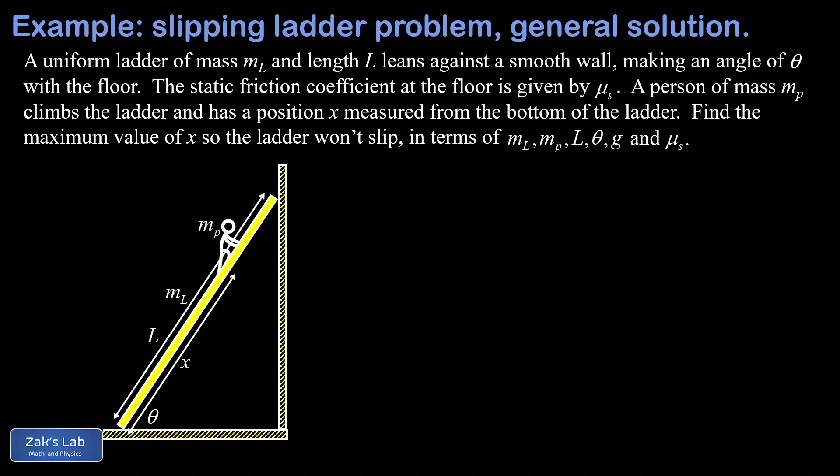In this video we're solving a classic static equilibrium problem called the slipping ladder problem. We're given a ladder with a length of L and a mass of m_L, leaning up against a smooth wall — meaning no friction at the contact point with the wall — at a fixed angle of theta. The contact with the floor does have friction, characterized by a static friction coefficient, and a person with mass m_P is walking up the ladder, currently a distance x from the bottom. The goal is to find how far the person can go before the ladder slips.